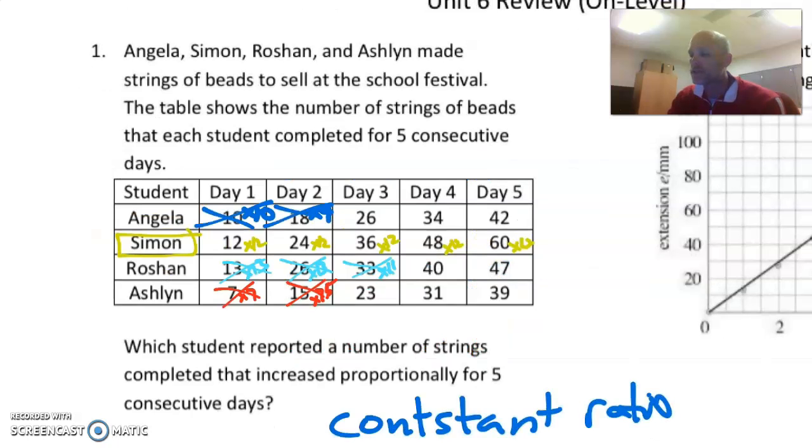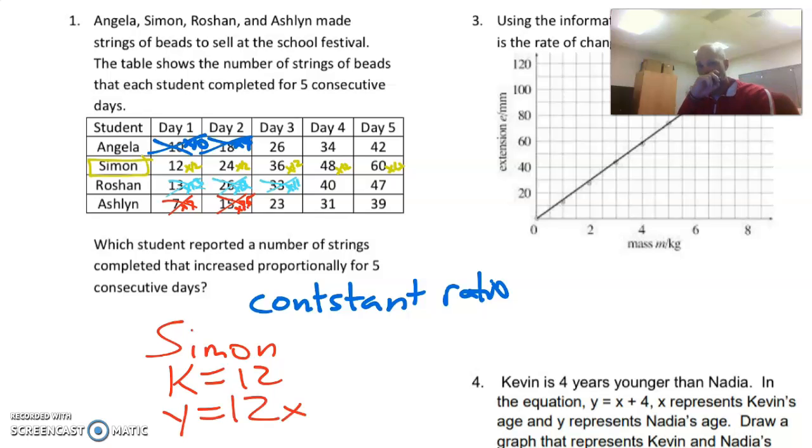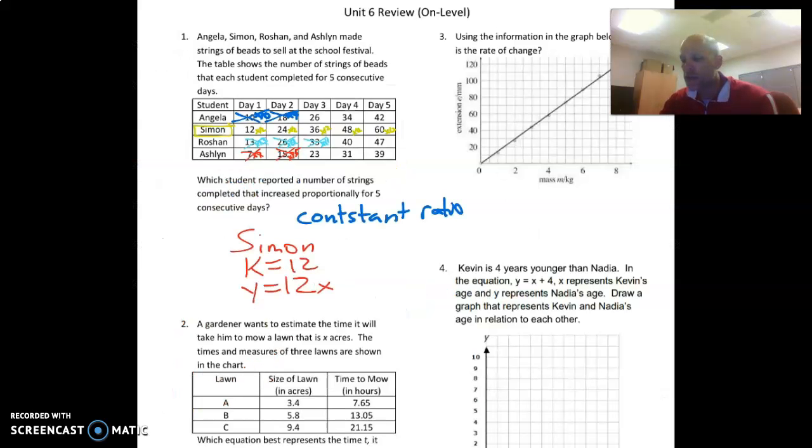So that is not multiplying by the same thing. So it cannot be Ashlyn. So what that means is what student? It is Simon. And K, meaning the constant of proportionality, would be 12. And the equation, if you had to write it, would be Y equals 12X. Number two,